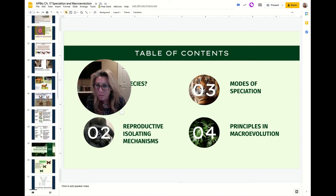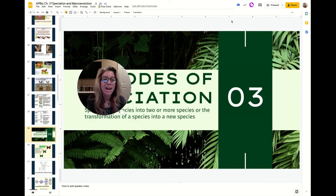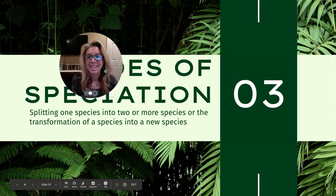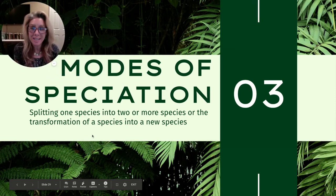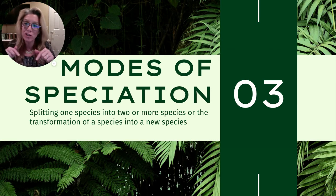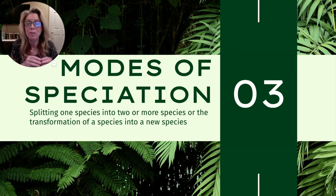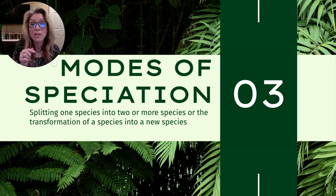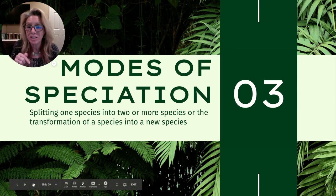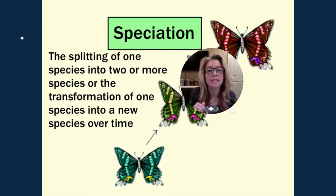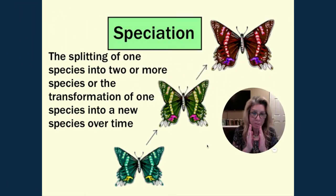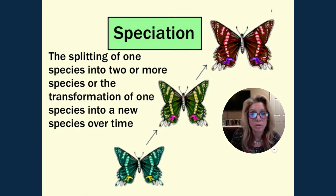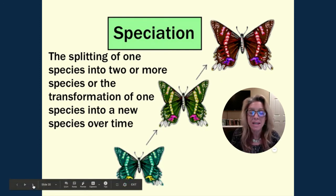Modes of speciation — in your notes, column 1 is the scaffolding I'll help you fill in, and column 2 is empty; I encourage you to add pictures there. Starting at 17.2, the first thing we need to know is: what is speciation? Speciation is the splitting of one species into two or more, or the transformation of one into another — the formation of new species.